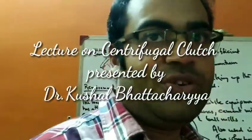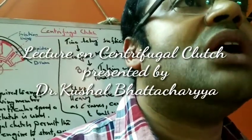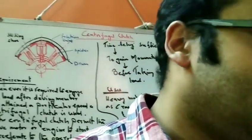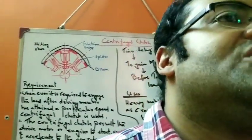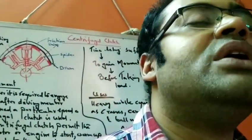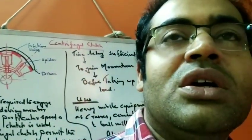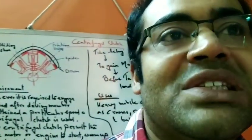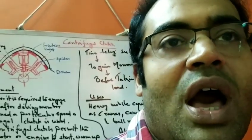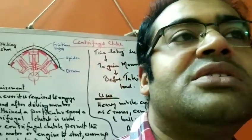Before we start, let's discuss what is the requirement of the centrifugal clutch — why it is required. We have already studied the friction plate clutch and the cone plate clutch. The requirement of the cone plate clutch was to get a wedge action. Now we want to discuss what is the requirement of a centrifugal clutch, where it is specially used, its working principle, mathematical formulation, and problem solving.